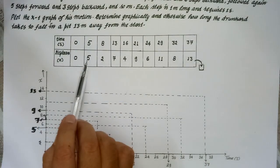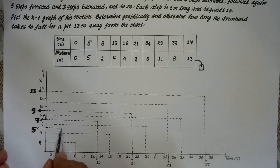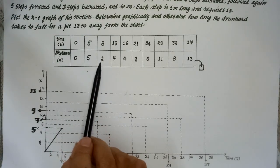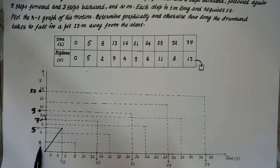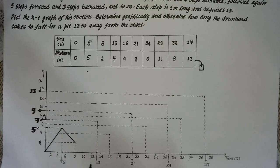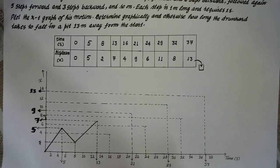At the 5th second, displacement is 5 meters — this point indicates displacement of 5 meters at the 5th second, giving the displacement-time graph from 0 to 5 seconds. After the next 3 seconds, at the 8th second, displacement is 2 meters. This point indicates 8 seconds and 2 meters displacement, so this line is the displacement-time graph for the 5 to 8 second interval. At the 13th second, displacement is 7 meters — this point indicates 13 seconds and 7 meters displacement.